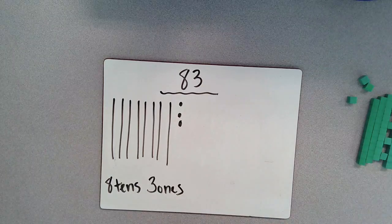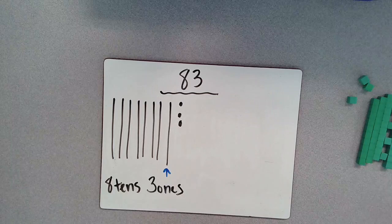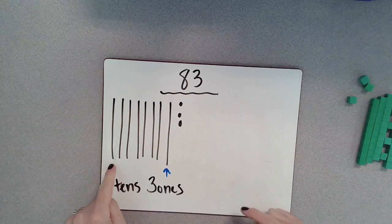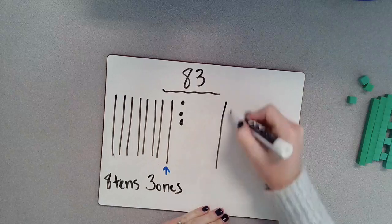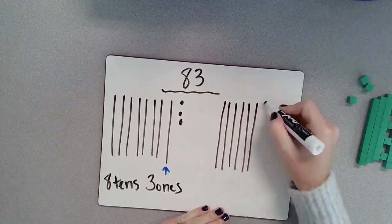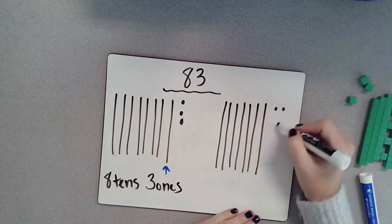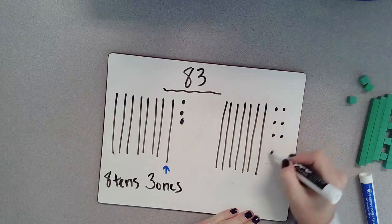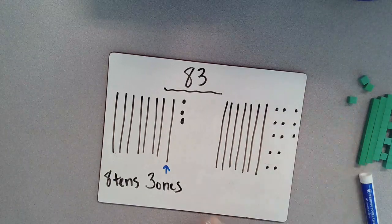I could also think about taking this 10 and breaking it apart into ones, leaving us with seven tens. So one, two, three, four, five, six, seven. One, two, three, four, five, six, seven, eight, nine, 10. One, two, three. So keep in mind that this group right here is worth 10.